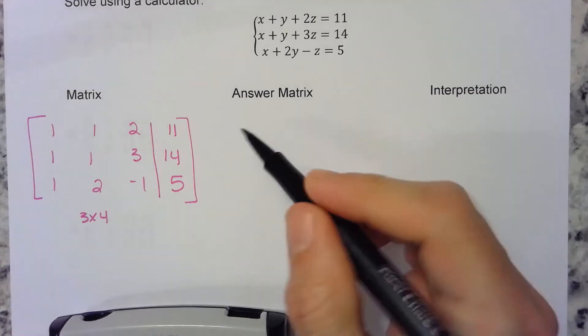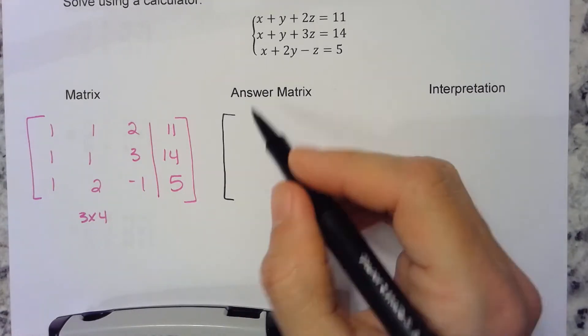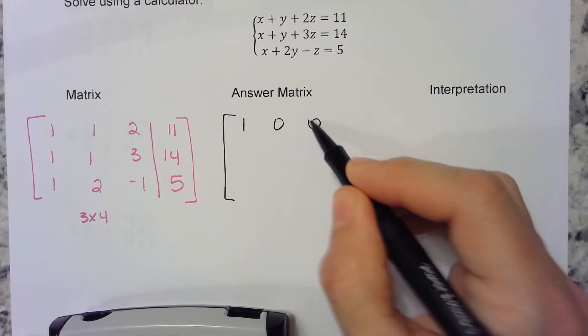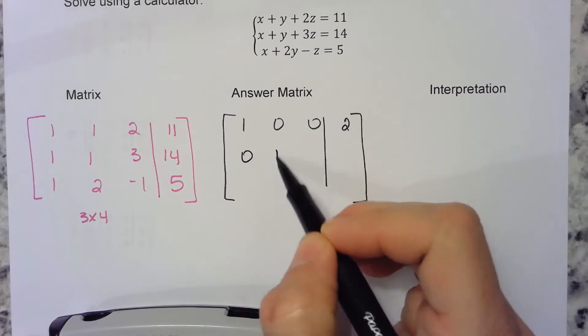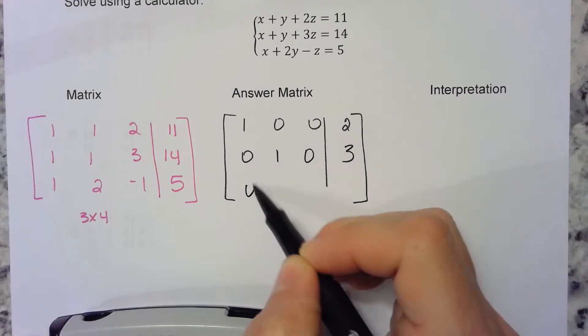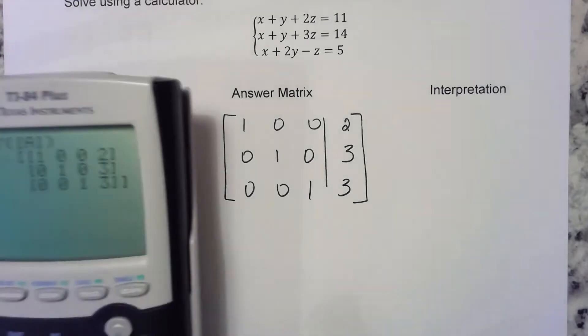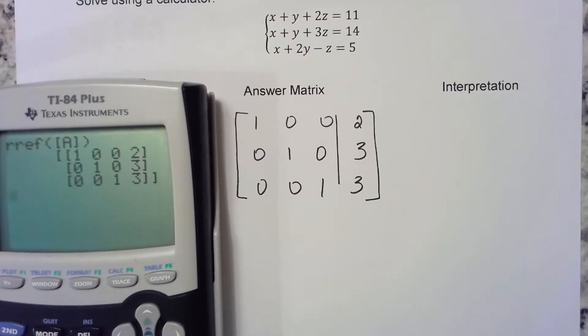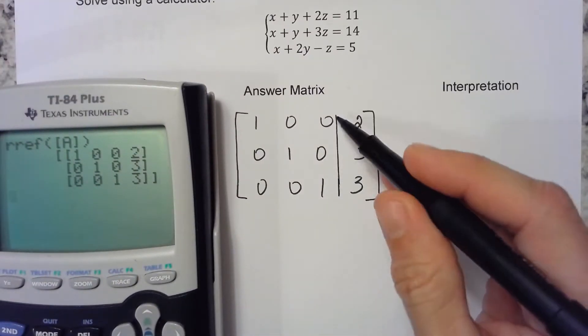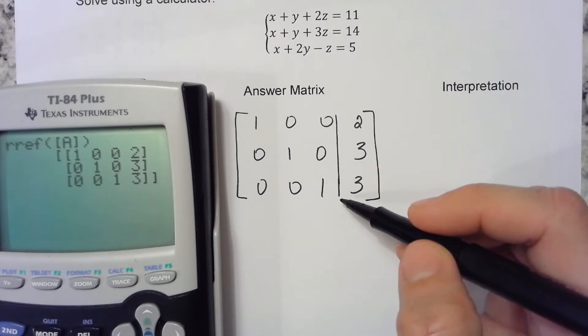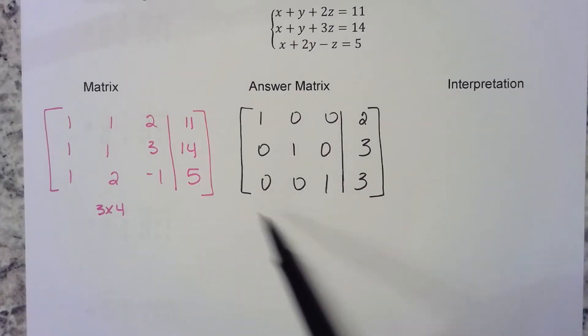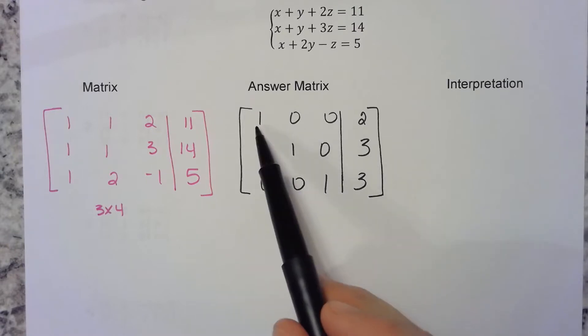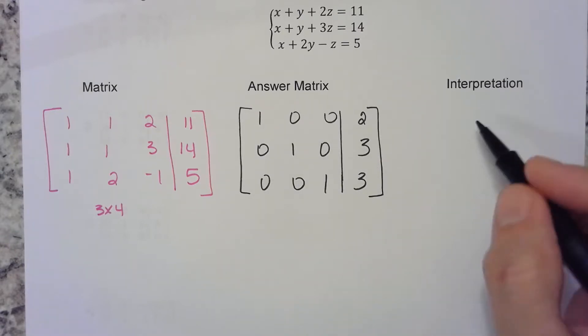The next thing I would want to see is 1 0 0 2, 0 1 0 3, 0 0 1 3. Notice that's what my calculator says right now. The calculator doesn't have this augmented line in there—I need you to remember that it's supposed to be there. When it says to interpret your answer, it means what does this mean.